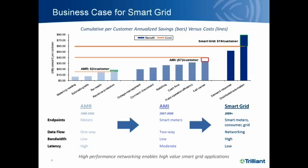Over the last two or three years, we have seen more interest in what's called AMI, or Advanced Metering Infrastructure, which takes the one-way communication of AMR and evolves it into two-way communication between the head end and the meters to enable applications like remote connect and disconnect, outage management, and time-of-use billing. But AMI on its own doesn't get to the full vision of a smart grid communications network.